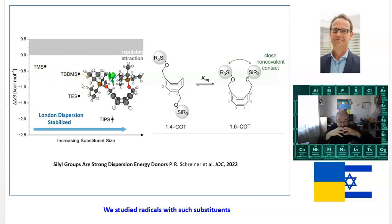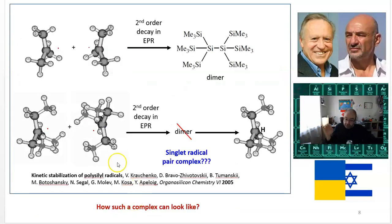Guess what? We studied radicals with such substituents before—I showed this work in previous videos, but now I'll show it from a different angle. In this work we generated silyl radicals; in this case it's a silyl radical with a trimethylsilyl substituent, and here the radical with tert-butyl dimethylsilyl substituent. The radicals were generated and their decay was studied using electron paramagnetic resonance.